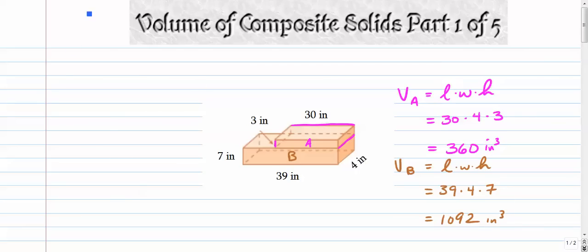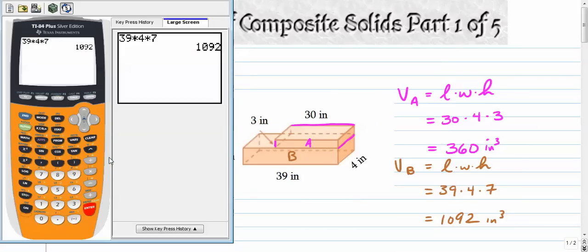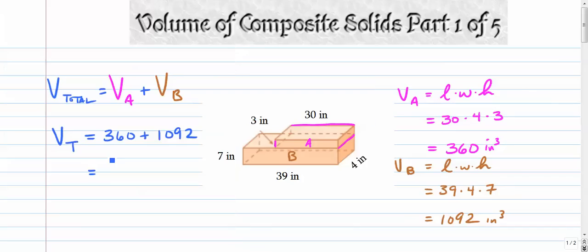And of course the total volume of the whole thing is volume of letter A plus volume of letter B. So to find volume of the whole thing we're just going to take 360 plus 1092. We're going to get 1452, 1452 cubic inches for the whole thing.